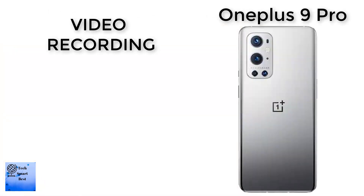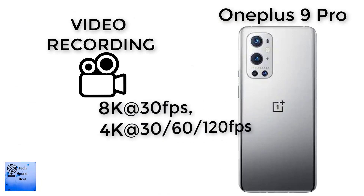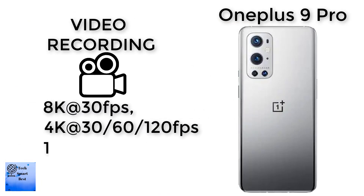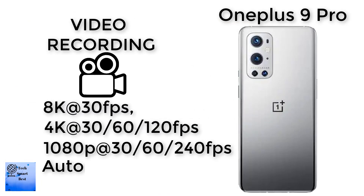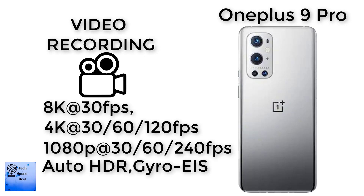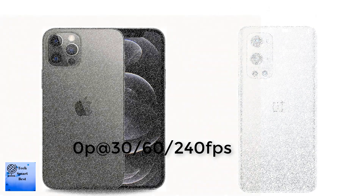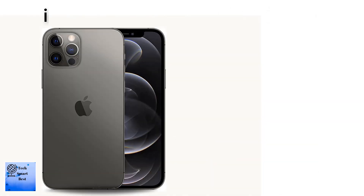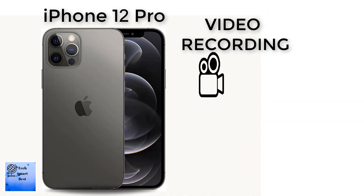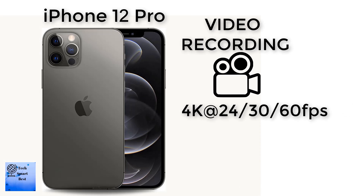The video recording of the main camera of the OnePlus 9 Pro: 8K at 30fps, 4K at 30, 60, and 120fps, 1080p at 30, 60, and 240fps, with Auto HDR and Gyro EIS. The video recording of the main camera of the Apple iPhone 12 Pro: 4K at 24fps and 60fps.